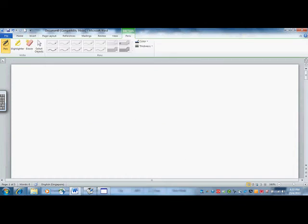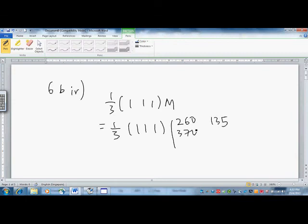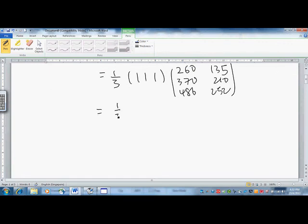Okay, now let's move on to 6b part 4. They ask you to calculate one-third times (1, 1, 1) M. In this case, you will do the scalar multiplication, and your M is actually the matrix (260, 135; 370, 210; 486, 252).